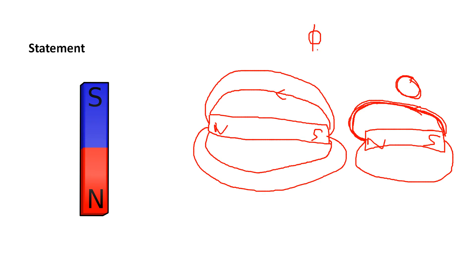Now, what is magnetic flux? Magnetic flux is denoted by the symbol Φ, with subscript B or M. Mathematically it is equal to the closed integral of B dot dS. Here B is the magnetic flux density, which means the number of magnetic lines of force passing normally through a particular area — that is known as magnetic flux.